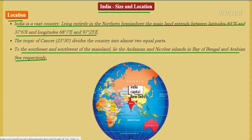Let's study about a new chapter called India: Size and Location. India is a vast country. It lies entirely in the northern hemisphere. The mainland of India extends between 8.4 degrees north latitude and 37.6 degrees north latitude, and longitudes between 68.7 degrees east and 97.25 degrees east.